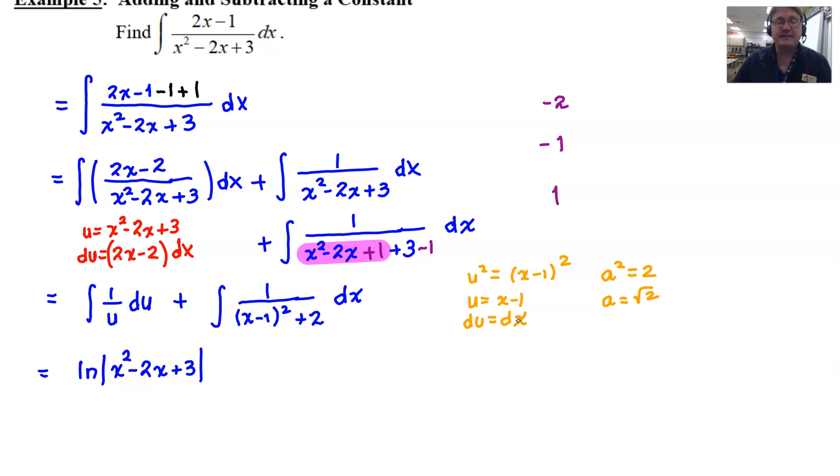At this point, the only thing left to do is to write the answer. Remember, arc tan does have the 1 over a in front. So we're going to start this off with 1 over the square root of 2. And then we follow it up with our arc tan u over a. U is x minus 1. The a is the square root of 2. And don't forget your plus c.